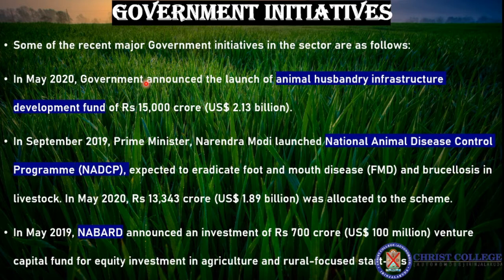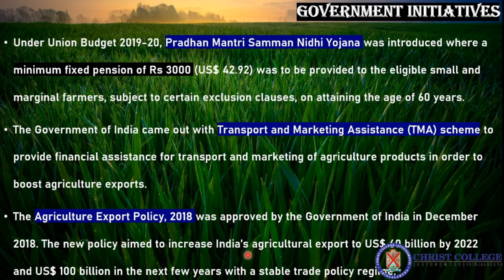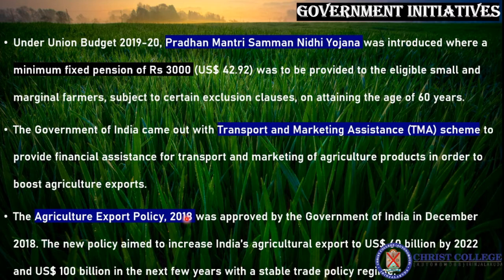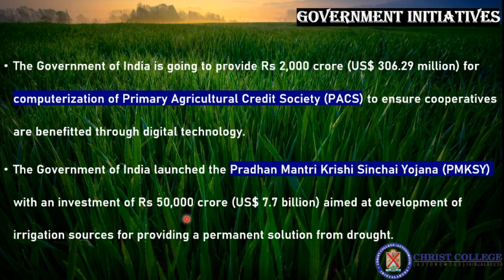Various government initiatives support the agriculture sector. In May 2020, the government announced the launch of the Animal Husbandry Infrastructure Development Fund and the National Animal Disease Control Program. NABARD announced investment of Rs. 700 crore venture capital for equity investment in agriculture. The 2019-20 Union Budget announced the Pradhan Mantri Kisan Samman Nidhi Yojana, providing a minimum fixed pension of Rs. 3,000 to eligible farmers. The Transport and Marketing Assistance Scheme and Agricultural Export Policy 2018 were also approved to increase agricultural exports.